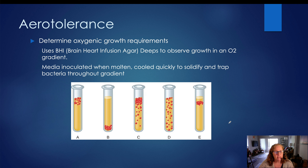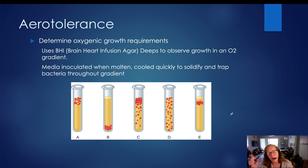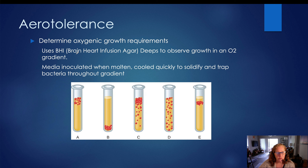The next experiment we're going to talk about is aerotolerance. In the aerotolerance test, we are trying to determine the oxygenic growth requirements of different bacteria. In microbiology, we do sometimes classify organisms based on their oxygenic requirements for growth. In this particular test, we are using what's called the BHI deep. BHI stands for brain heart infusion. This is a type of agar that is very nutrient dense and helps to support the growth of anaerobic organisms.